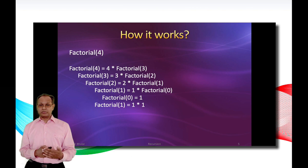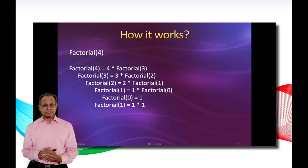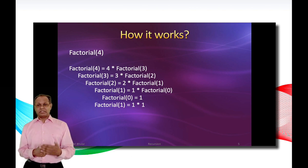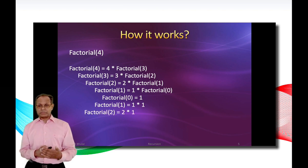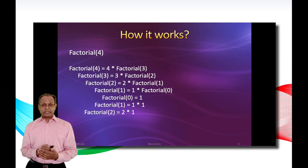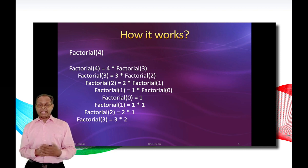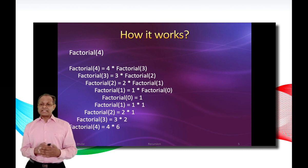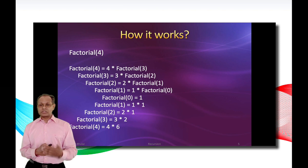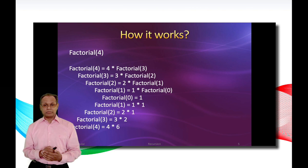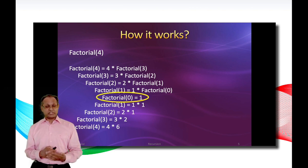Zero factorial is by definition 1 and is consequently known. Now we can calculate by recursion: 1 factorial, as we can substitute the value of 0 factorial into the function. Once we have calculated the value of 1 factorial, we can calculate 2 factorial, then 3 factorial, and finally 4 factorial. This is the way recursion works. Note that recursion needs a so-called stop or exit condition to go back to solve the original problem. In our example, the stop condition is 0 factorial, whose value is known.